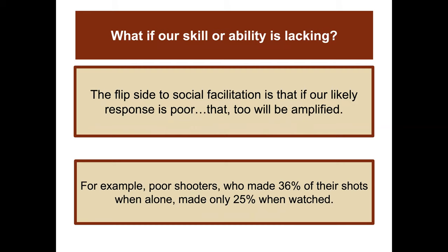What if our skill or ability is lacking? The flip side to social facilitation is that if our likely response is poor, that too will be amplified. For example, poor shooters who made 36% of their shots when alone made only 25% when watched.